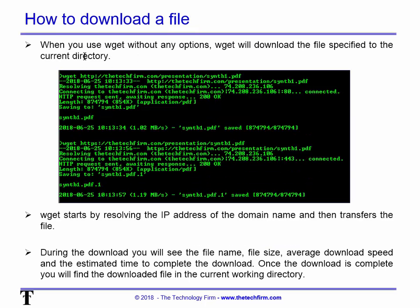How to download a file: when you use WGET without any options, WGET will download the file specified — pretty simple. The way it works is it actually resolves the IP address from the domain name first. During the download you see the file name, the file size, the average download speed, and the estimated time to complete. Once the download is complete, you'll find the downloaded file in the current working directory.